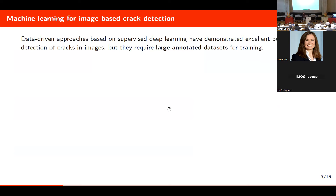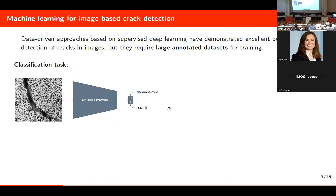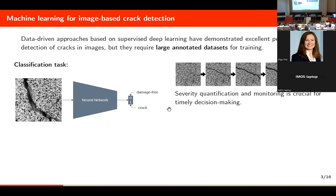For image-based crack detection, we have many machine learning-based approaches that are data-driven — in particular deep learning with convolutional neural networks. This is supervised training and, as such, it requires large annotated datasets. The task of crack detection can be expressed as a classification task: you train a neural network to classify images into two classes — one for damage-free samples and one for cracks — giving binary outputs with a probability for each class.